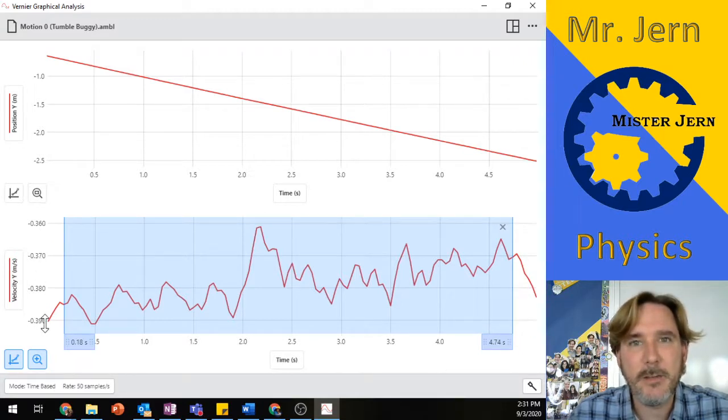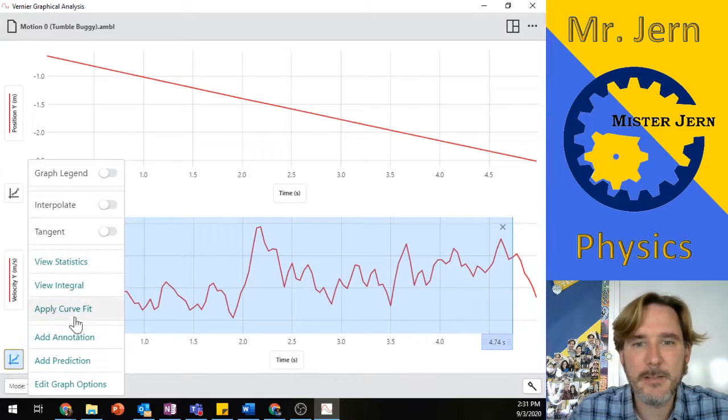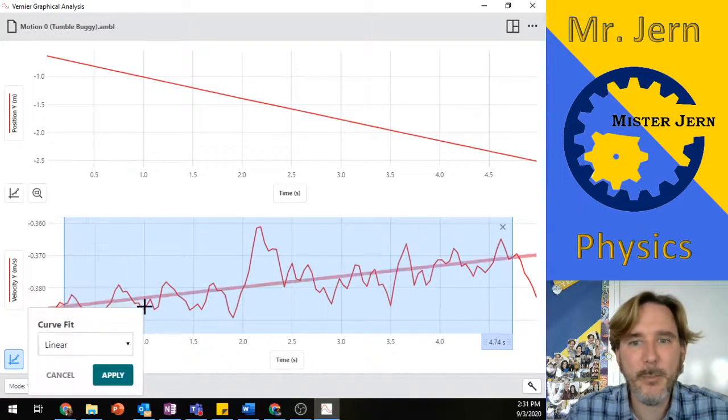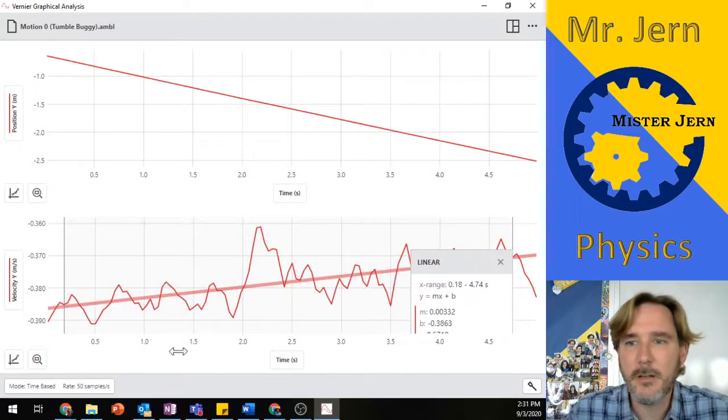It's only a matter of a couple hundredths of a meter per second, so it looks like it might be pretty good here. What I'm going to do is apply a curve fit. When I do that, I'm going to choose linear, and here's what we got. It looks like it's sloping pretty badly.